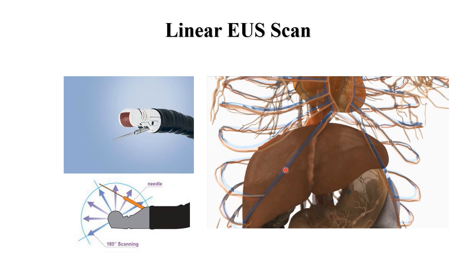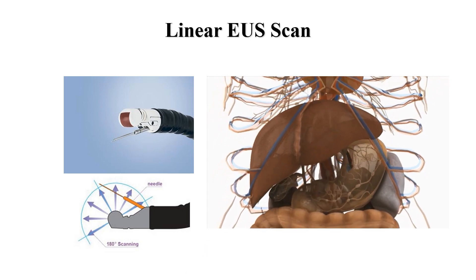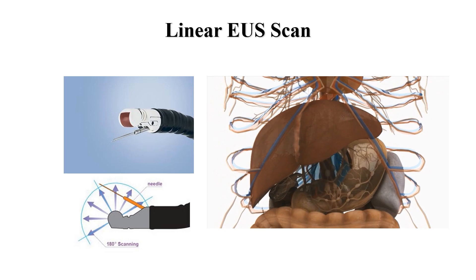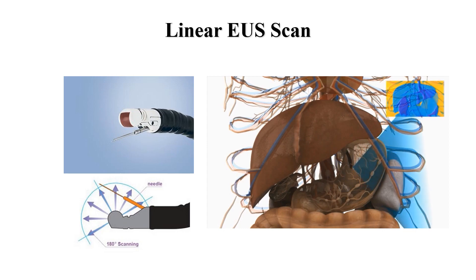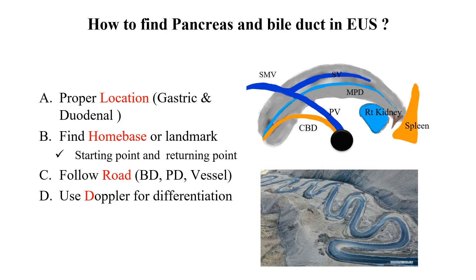Linear EUS shows a one-plane image of the target organ. Many endoscopists are not familiar with linear EUS imaging. We need to know how to find the pancreas and bile duct on EUS. I will suggest four things.